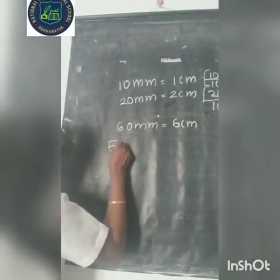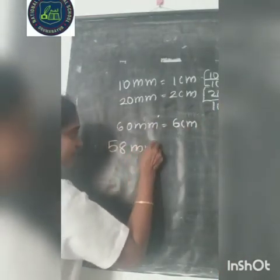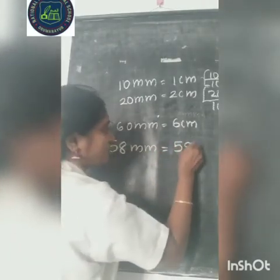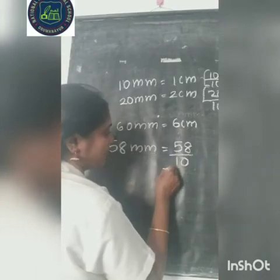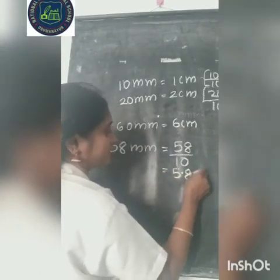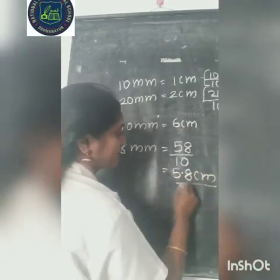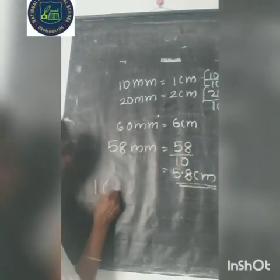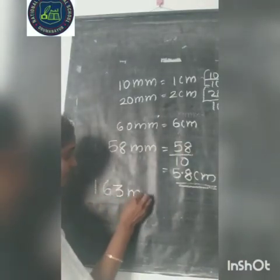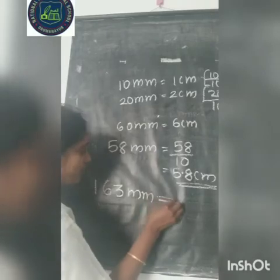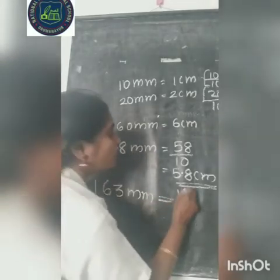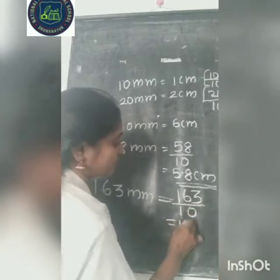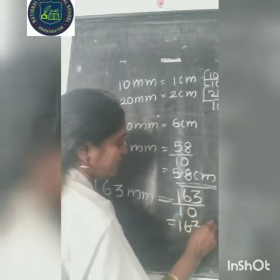What about 58 millimeter? 58 millimeter divided by 10 equals 5.8 centimeter. And what about 163 millimeter? 163 divided by 10 equals 16.3 centimeter.